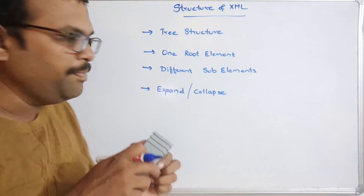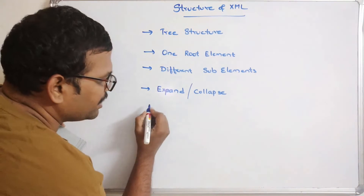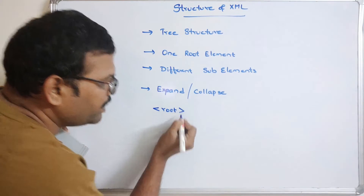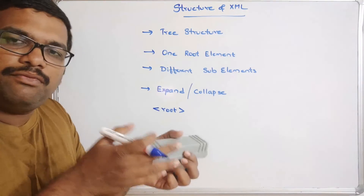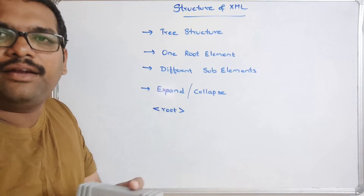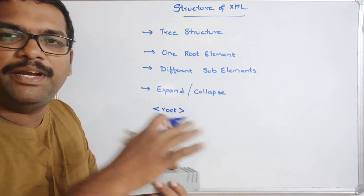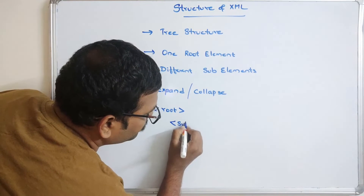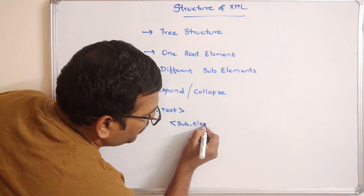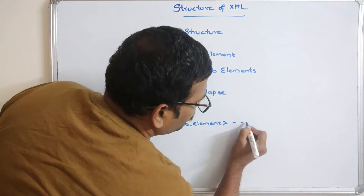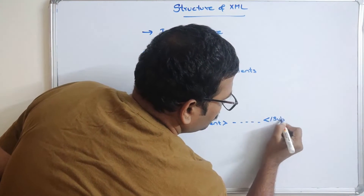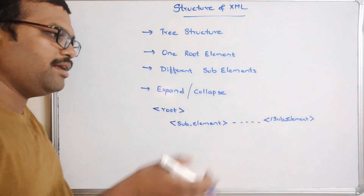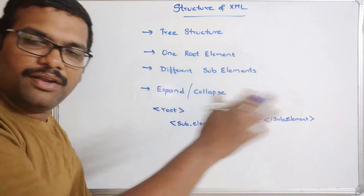After displaying the content of XML, we'll have the options to expand and collapse. I'll show it by executing a small program. The structure will be like this: root, and as we discussed in our previous session, XML will be defined with user-defined tags — the tags will be defined by the user itself. So we have root and sub-elements.